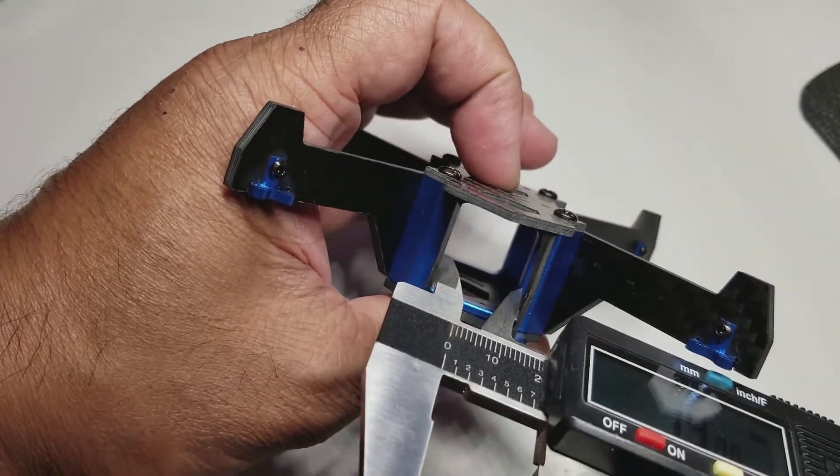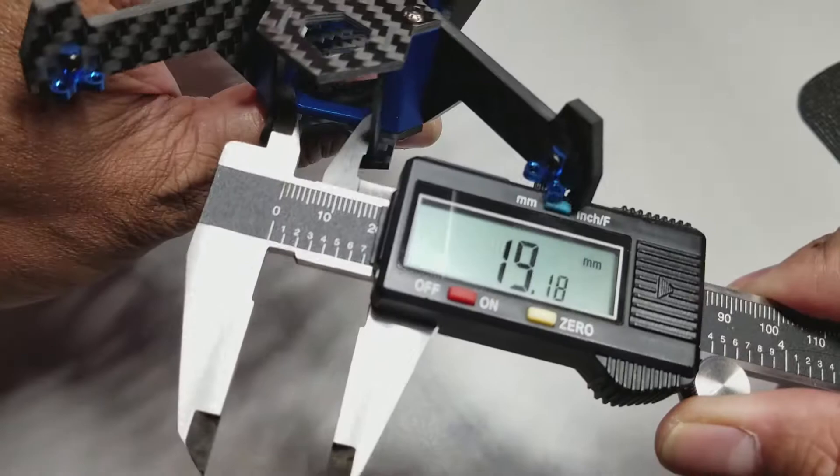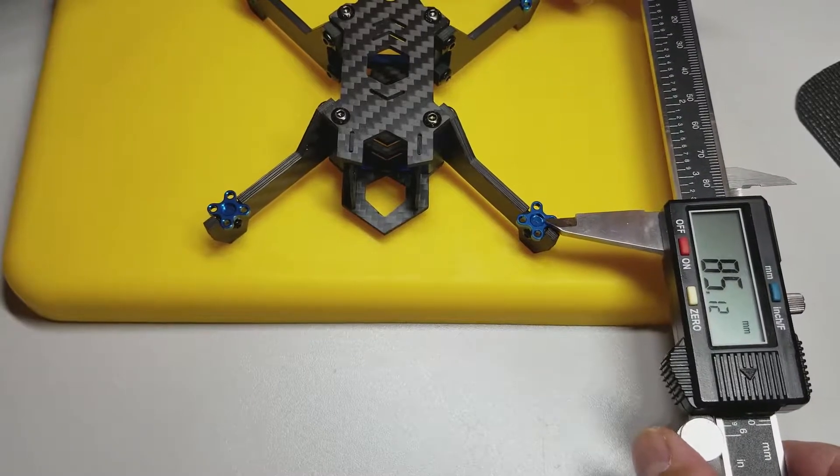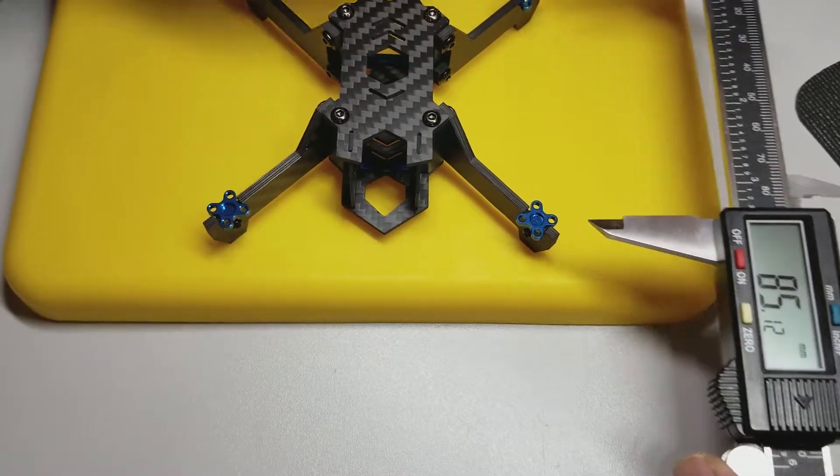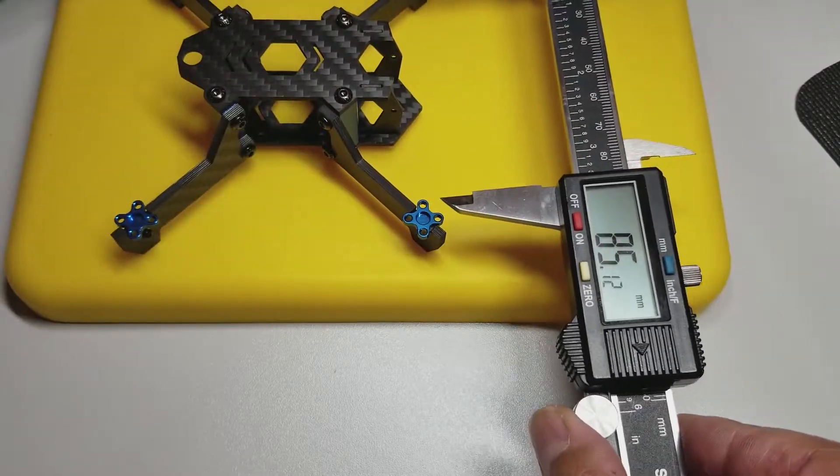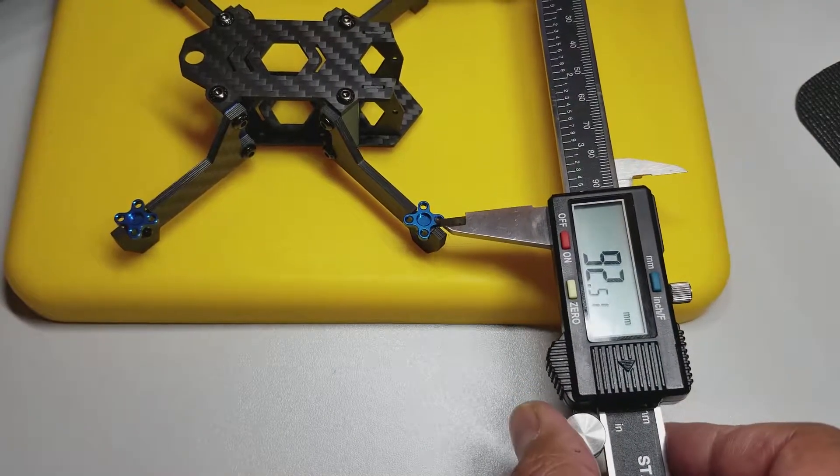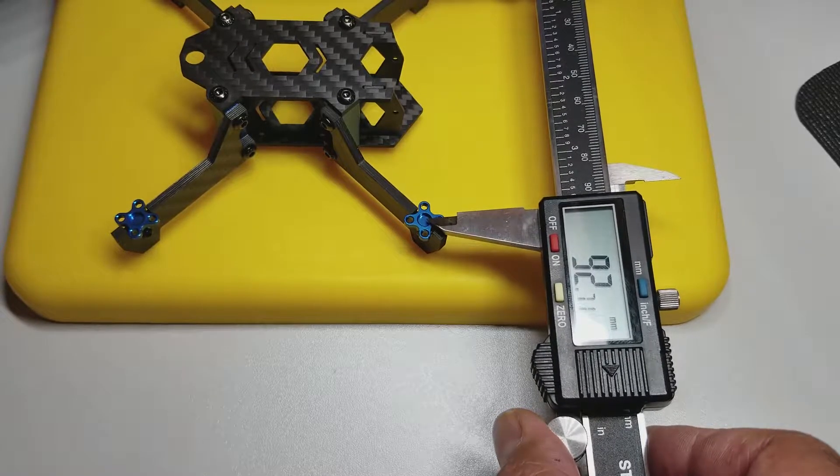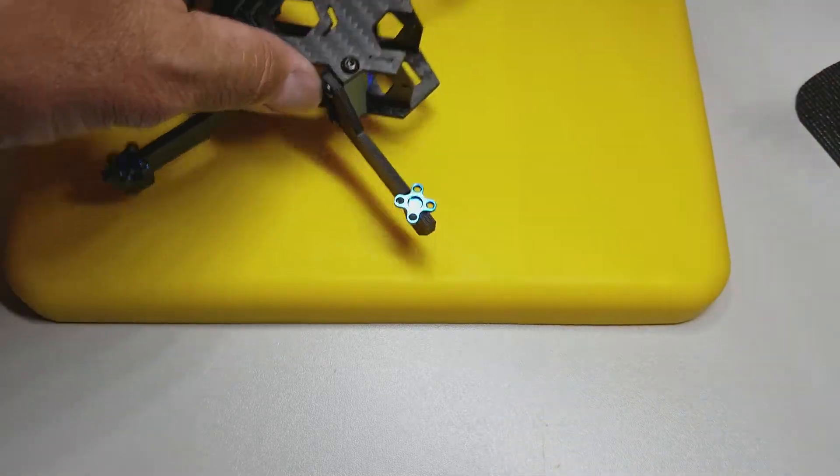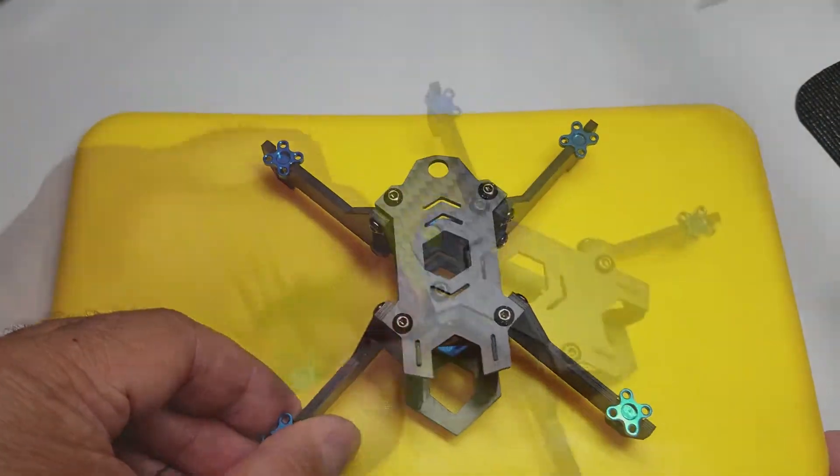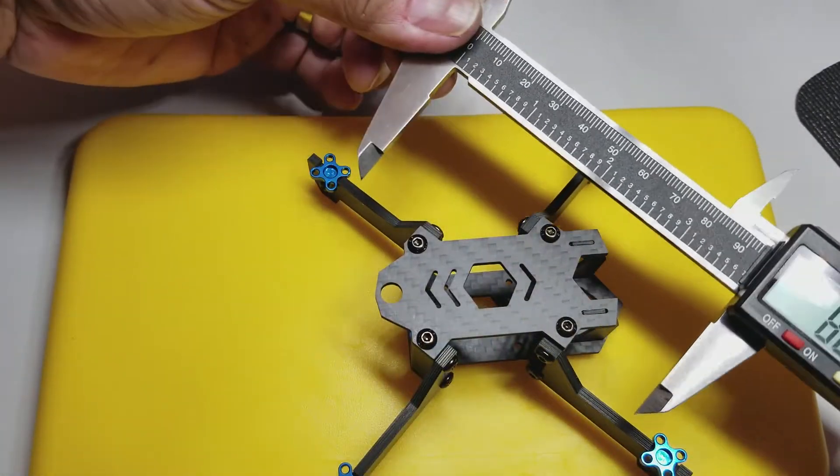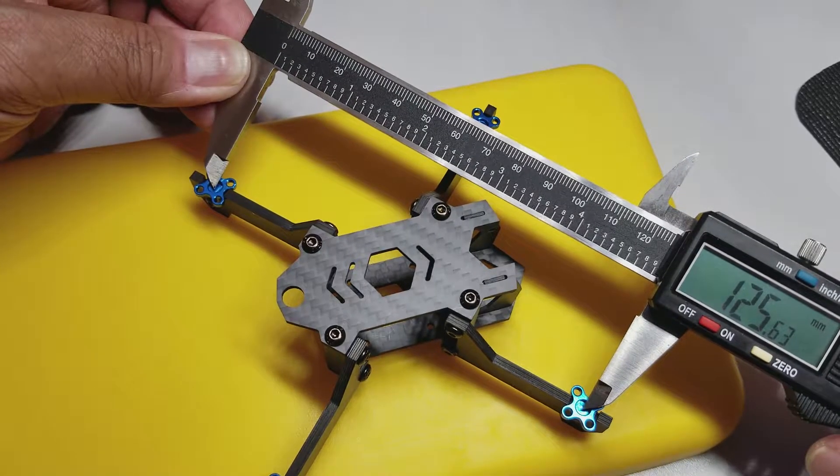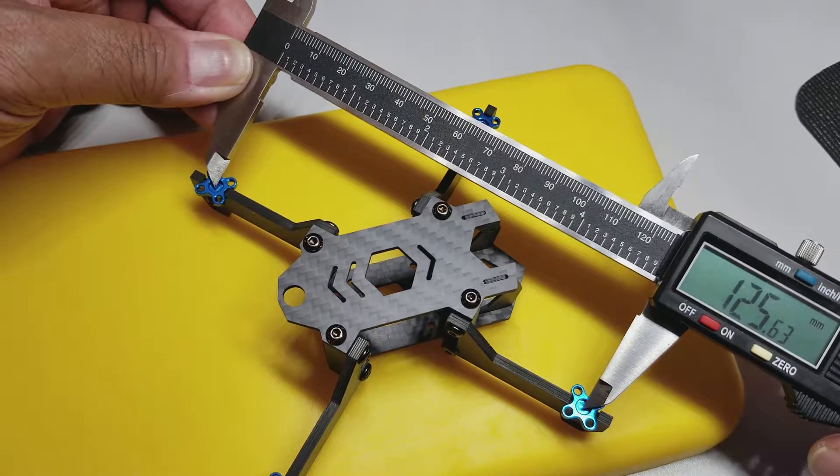I know this is for micro cameras but let's measure it while I have these out. 19mm mounting area for the cameras. Front to back we have about 85mm. And then the side to side is a little bit wider at about 92mm or 93mm. So we're looking at a slightly squished frame here. Motor to motor is going to be probably around 125mm. Yeah, 125mm guys.